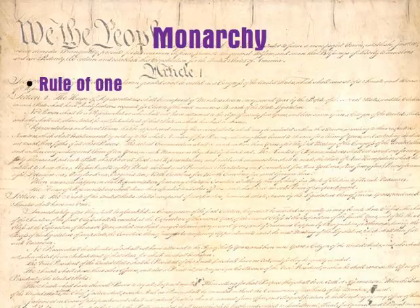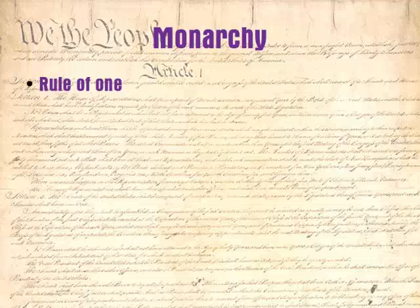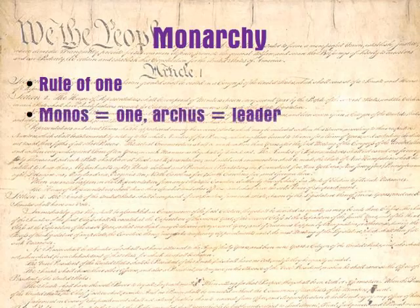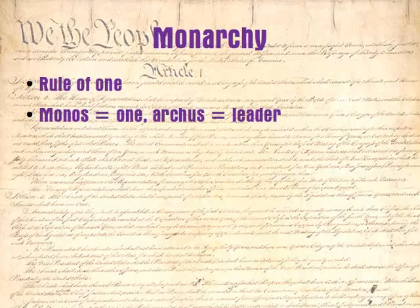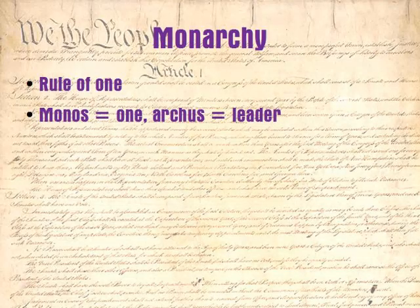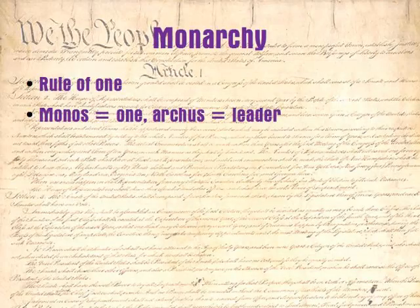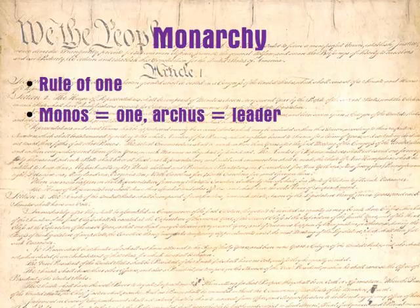We'll start with monarchy. You're most likely familiar with this — it's when power is concentrated in a single individual. It comes from the Greek word monos, meaning one, and archos, meaning leader. So a monarchy is when there is one and only one leader. Obviously, this is the kind of government the founders rebelled against, specifically targeting most of their complaints against the monarch, King George.